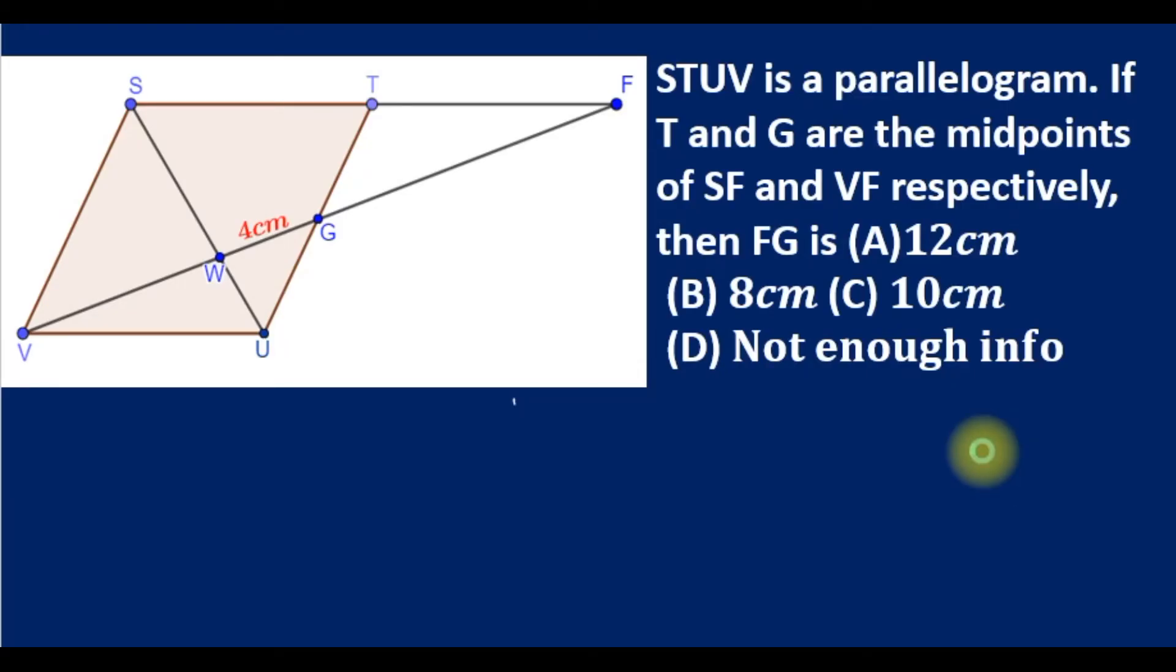STUV is a parallelogram. If T and G are the midpoints of SF and VF respectively, then FG is?